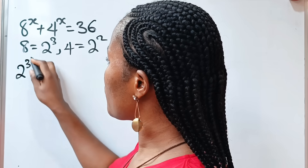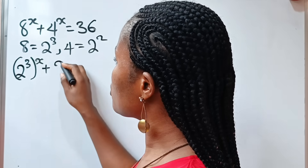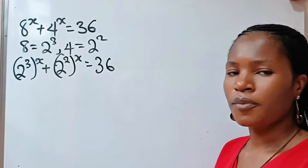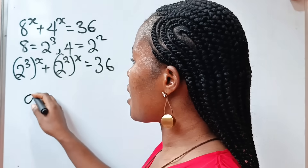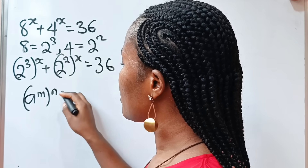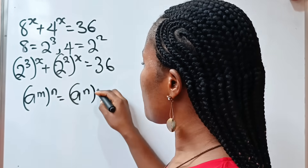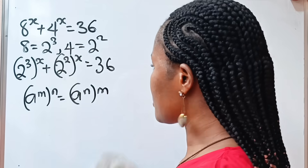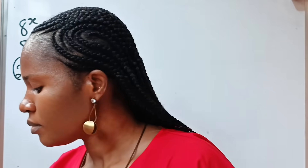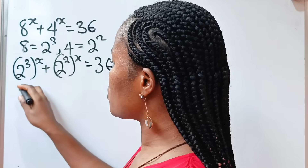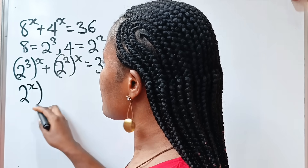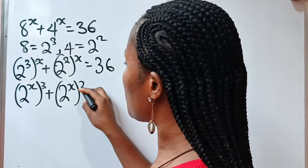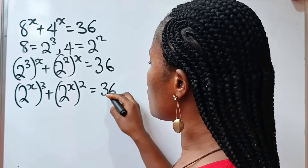So we have 2 to the power of 3 raised to the power of x, plus 2 to the power of 2 raised to the power of x, is equal to 36. Now remember that a to the power of m raised to the power of n is equal to a to the power of n raised to the power of m. So that means we can write this as 2 to the power of x raised to the power of 3, plus 2 to the power of x raised to the power of 2, is equal to 36.